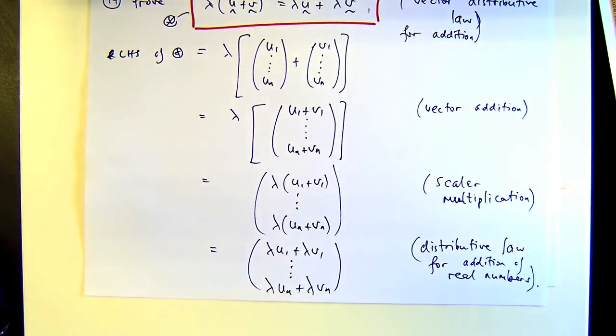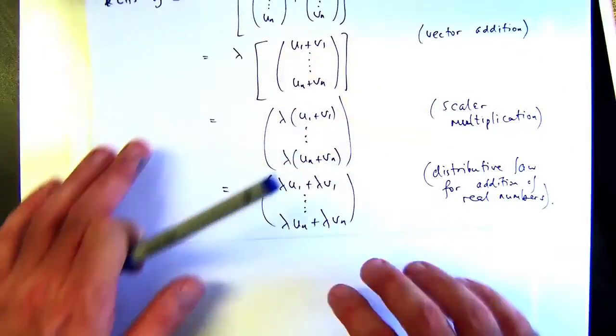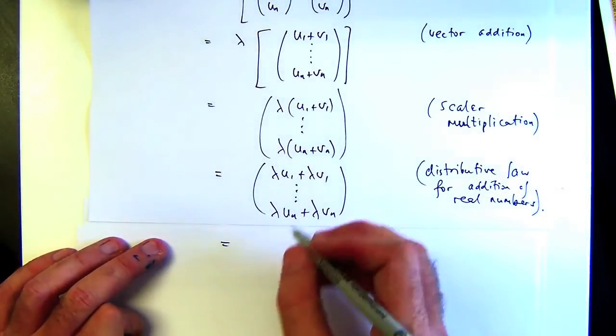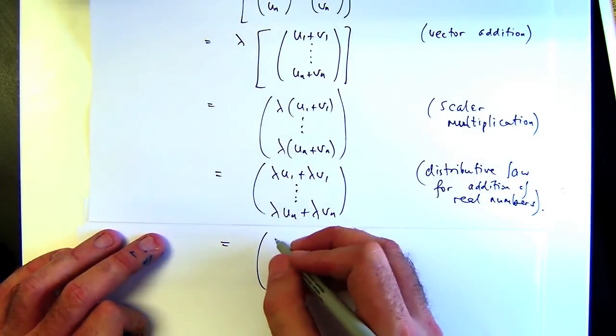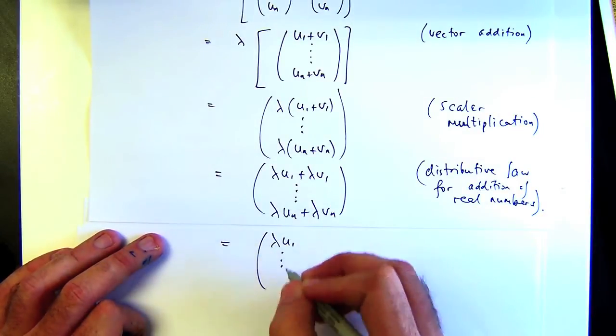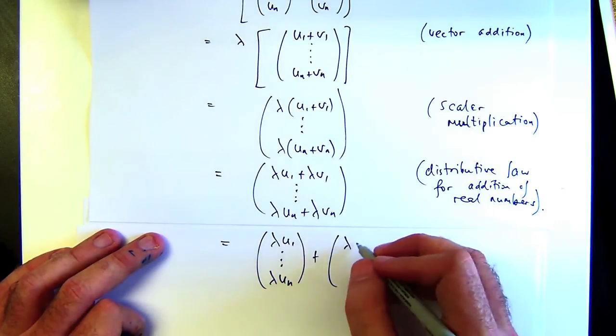Or just the distributive law for real numbers. Then I can put it back as a vector. So let's write it like this. That's the vector addition.